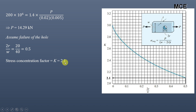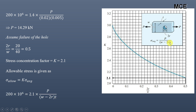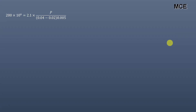Again, the allowable stress equals K times the average stress. The average stress at the hole portion equals P divided by (w − 2r) × t. The allowable stress is 200 MPa, K = 2.1, w = 40 mm, 2r = 20 mm, and t = 5 mm. Putting in the values and solving for P, we get P = 9.52 kN. This is the maximum force that can be applied so that failure will not occur at the hole.